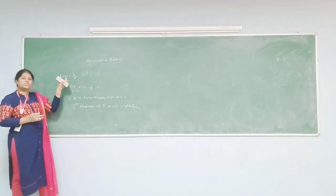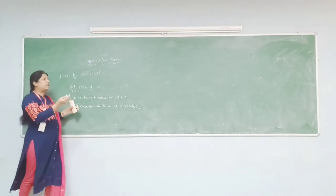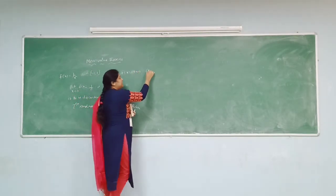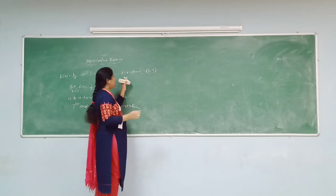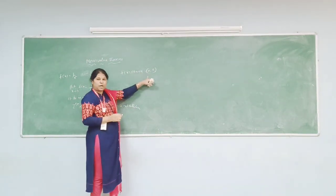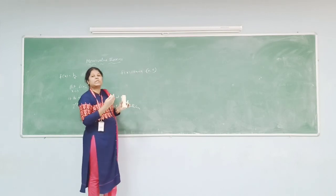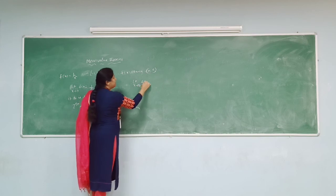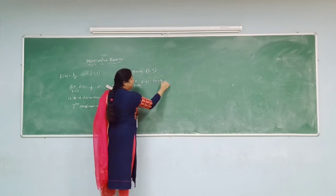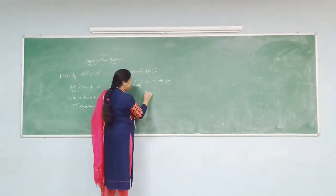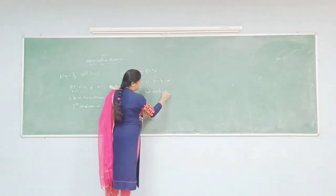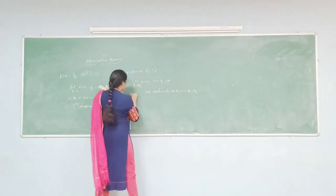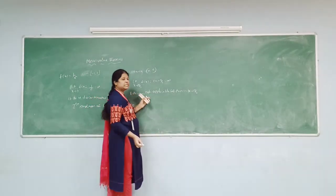Take one more example: f(x) = tan(x) in the interval [0, π]. This function is also discontinuous at x = π/2, because as x tends to π/2, tan(π/2) is undefined (tends to infinity). Therefore Rolle's theorem is not applicable for this function at x = π/2, and the theorem does not hold in the interval [0, π].